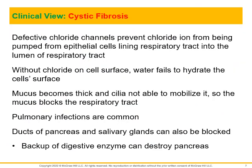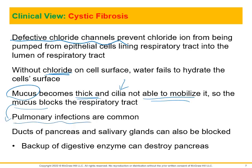In cystic fibrosis, there are defective chloride channels. The chloride ion can't be pumped out of the epithelial cell lining. Without this chloride, the mucus becomes really thick, causing the cilia not to be able to move. The mucus is stuck in the respiratory tract, blocking airflow. A buildup of mucus can increase pulmonary infections. This can also happen in the ducts of the pancreas and salivary glands — a backup of digestive enzymes can actually destroy the pancreas. Basically, extra thick mucus due to a defective chloride channel means more mucus blocking the respiratory tract and increased infections.